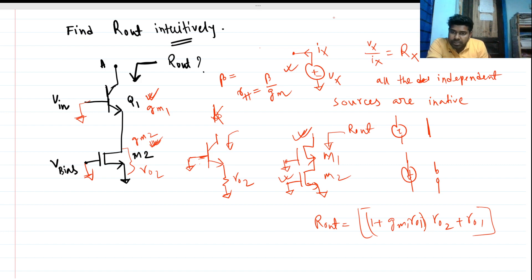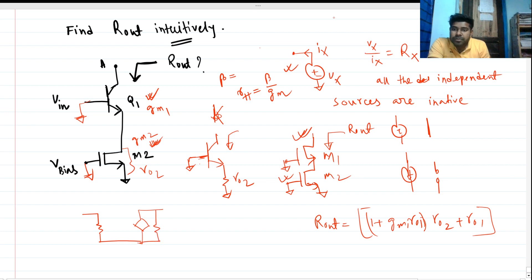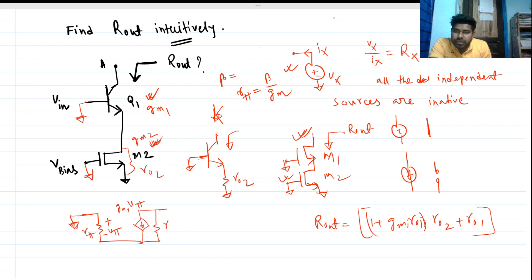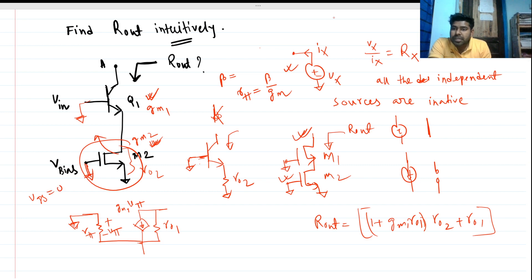The small signal model of this BJT will have r_pi, and across it plus-minus v_pi, and the dependent current source will be gm1 times v_pi. This is how it connects to ground. The VGS of the M2 MOSFET will be zero because both gate and source are at ground, so there is no dependent current source for this MOSFET — there is only the output impedance ro2.